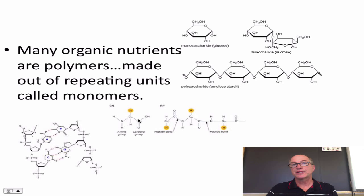Now, many of our organic nutrients are polymers. Polymers are made out of repeating units called monomers, or these single units. I'll give you an example. Our most common sugar is a monosaccharide, simple sugar, called glucose. I'm sure you've heard of it.